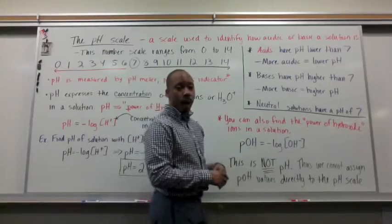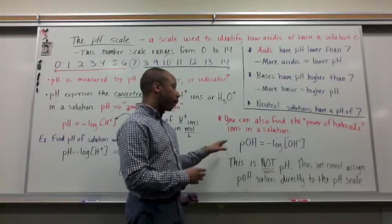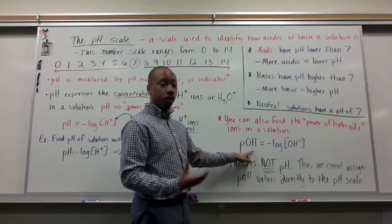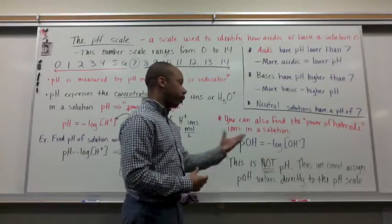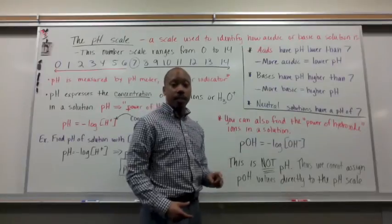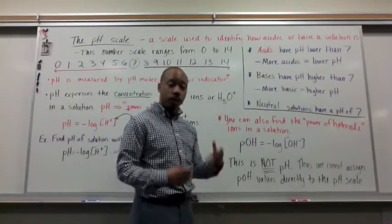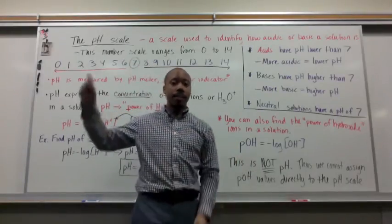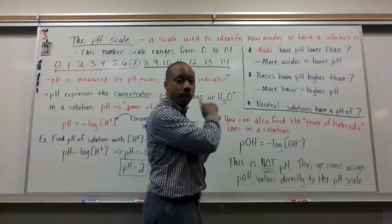You can also find the power of hydroxide, not really a term that we use very often but the POH it's called. The power of hydroxide ions in the solution. It's the negative log of hydroxide ions. It will be the same mathematics as we did over here. This is not pH, thus we do not use this scale when we're talking about pH. So we wouldn't say it's a pH of 10 so it's basic, it doesn't work the same way. This is a pH scale not a POH scale, so you wouldn't use this directly with that scale.